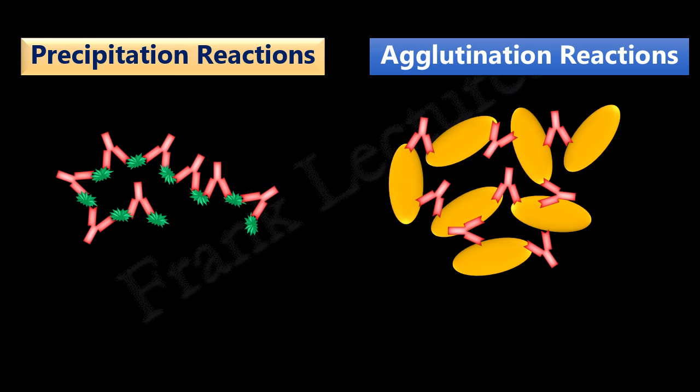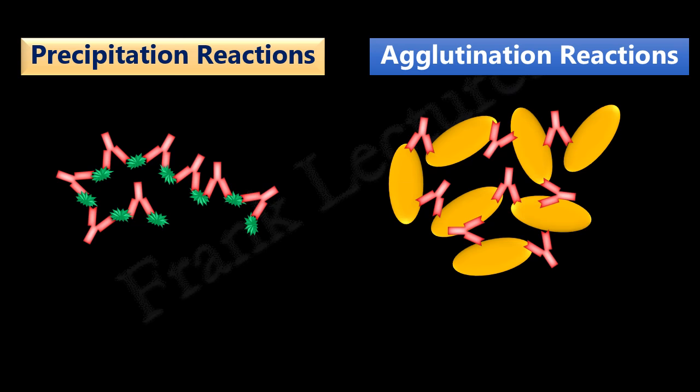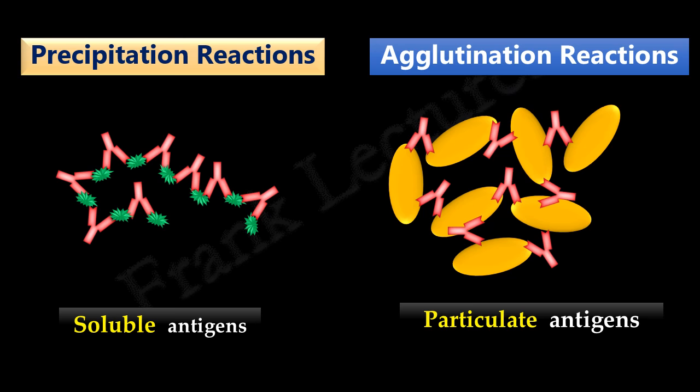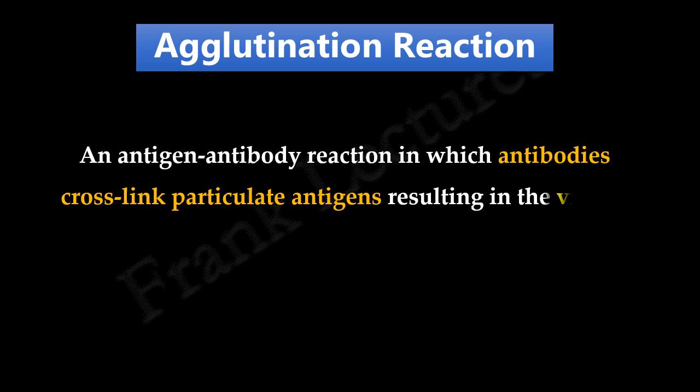The difference between agglutination and precipitation reactions is that precipitation involves the aggregation of soluble antigen molecules, whereas agglutination involves the clumping of insoluble or particulate antigens. Like precipitation reactions, agglutination also occurs when antigens and antibodies are in equivalent proportions. Agglutination reaction is defined as an antigen-antibody reaction in which antibodies cross-link particulate antigens, resulting in the visible clumping of particles.